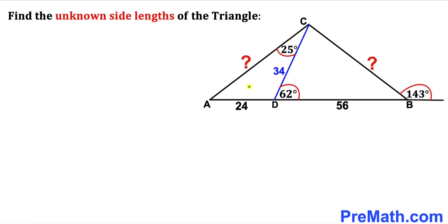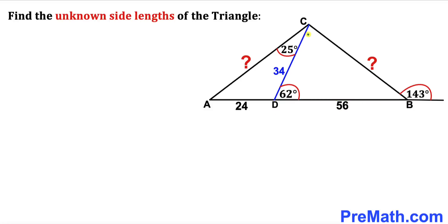Welcome to pre-math. In this video we have triangle ABC. Side length AD is 24 units, side length BD is 56 units, and side length CD is 34 units. Moreover, angle ACD is 25 degrees, angle BDC is 62 degrees, and this angle is 143 degrees.